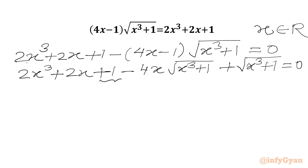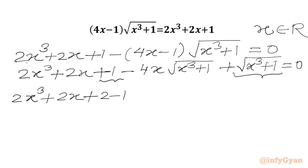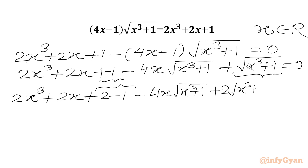Now we will be splitting. 1 can be written as 2 - 1, and this term will be written as 2 - 1 with √(x³ + 1). So: 2x³ + 2x + 2 - 1, this is our +1, then minus 4x√(x³ + 1), and then 2√(x³ + 1) - √(x³ + 1) equal to 0.